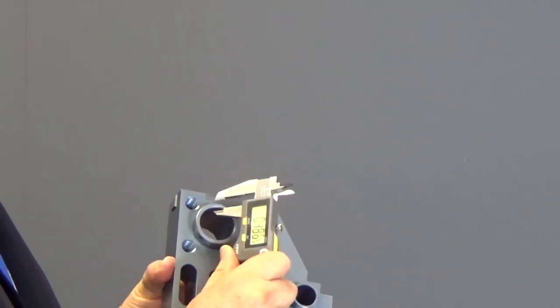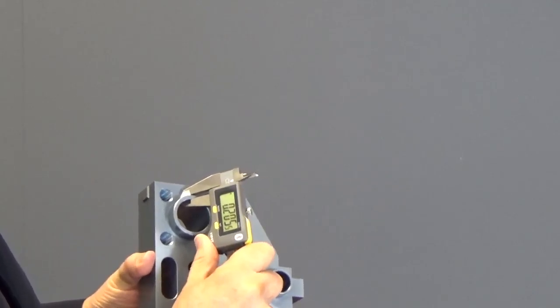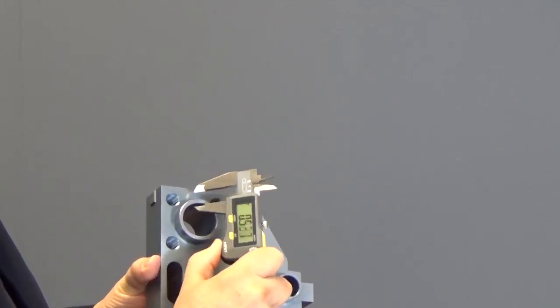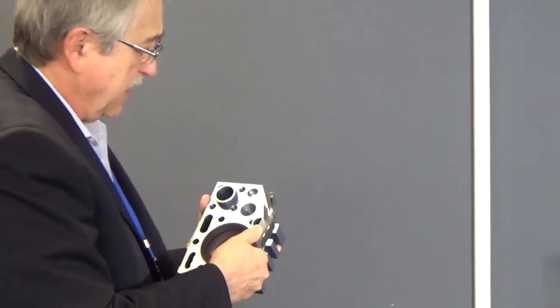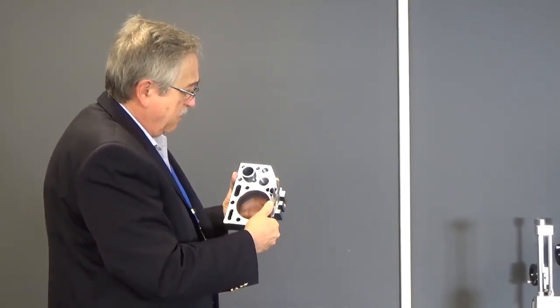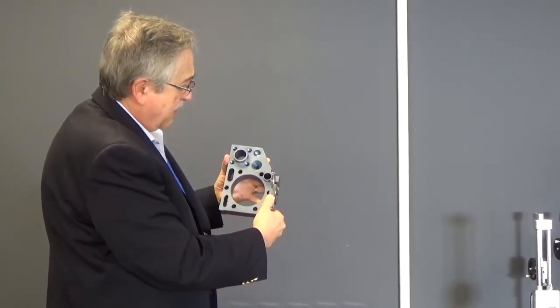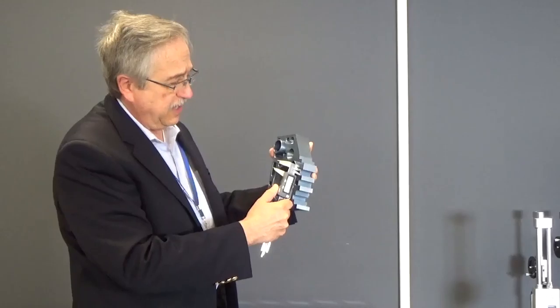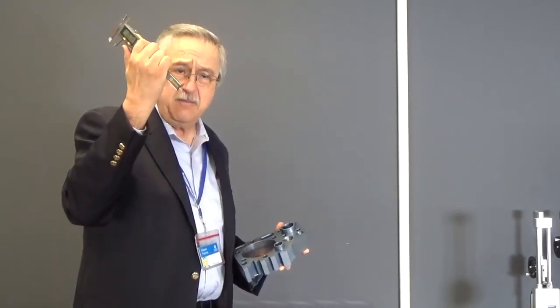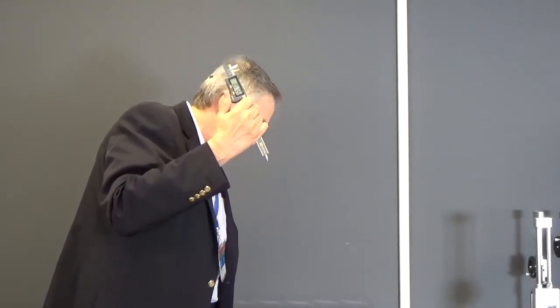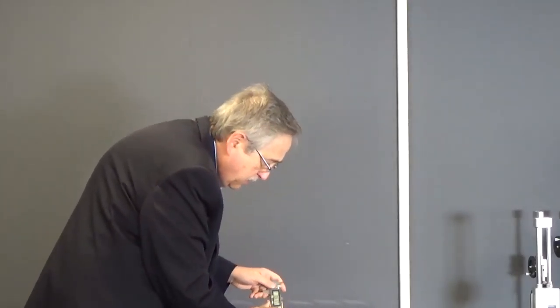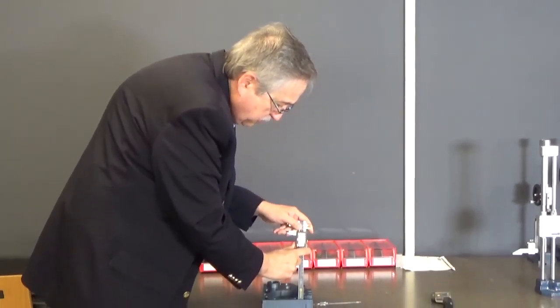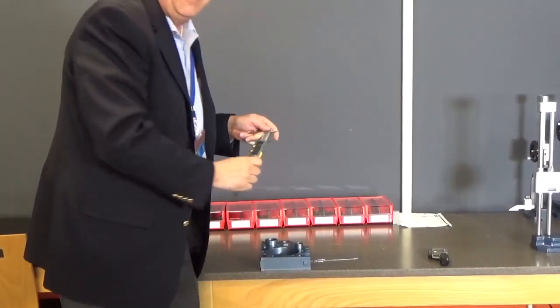I could also measure wall thicknesses utilizing the caliper. I could also look at widths of a slot and read that off using the caliper. I also have a means in this caliper of measuring depth. So if I was to go into a hole here, I would be able to place this here and make a measurement of the depth of that hole.